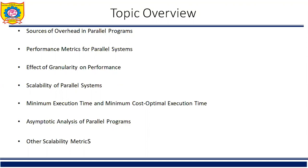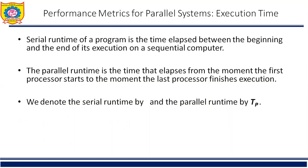Now, performance metrics of parallel systems — this is the second article of unit number 4. It is important to study the performance of parallel programs with the view of determining the best algorithm, evaluating hardware platforms, and examining the benefits from parallelism. A number of metrics have been used based on desired outcomes of performance analysis. The serial runtime of a program is the time elapsed between the beginning and end of its execution on a sequential computer. The parallel runtime is the time that elapses from the moment the first processor starts to the moment the last processor finishes. We denote serial runtime by TS and parallel runtime by TP.